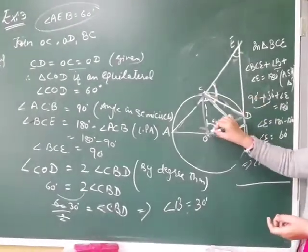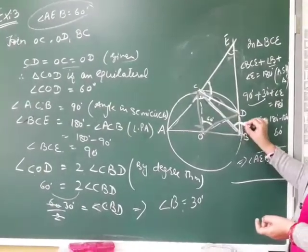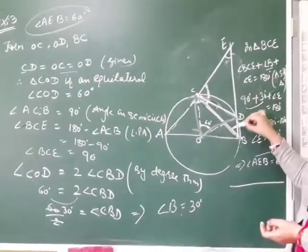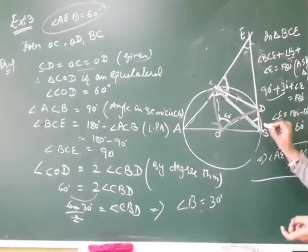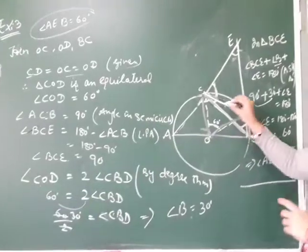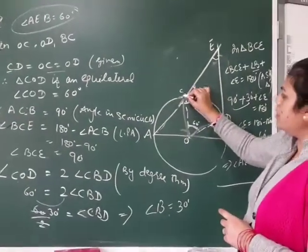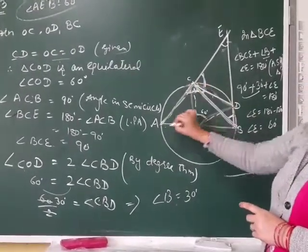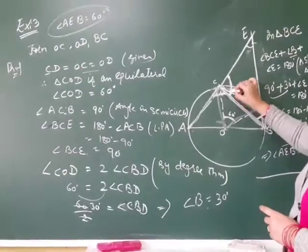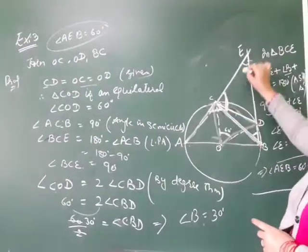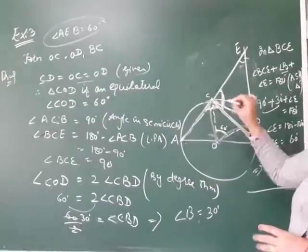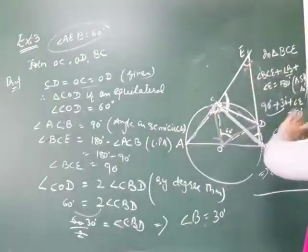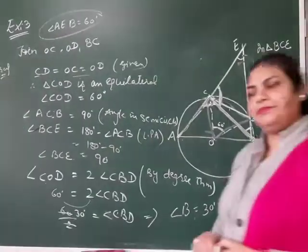The equilateral triangle has all angles equal to 60. Angle COD is 60. Angle ACB is 90 because AB is the diameter. BCE is 90. Angle CBD is 30. Therefore angle AEB is 60 degrees. Clear? This is the complete proof.